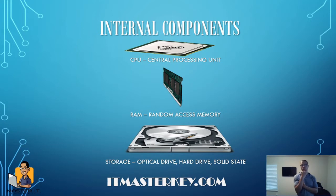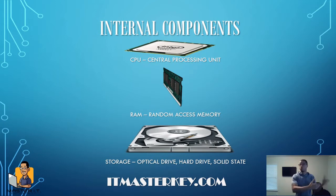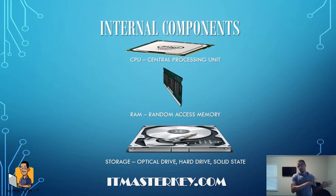Next up is RAM — Random Access Memory. RAM is what your computer uses instead of accessing things directly from your hard drive. It accesses from your RAM instead, which makes things a lot quicker. Instead of going through your entire hard drive, it can access the stuff you're always opening, the stuff you're always working with, right inside your RAM.